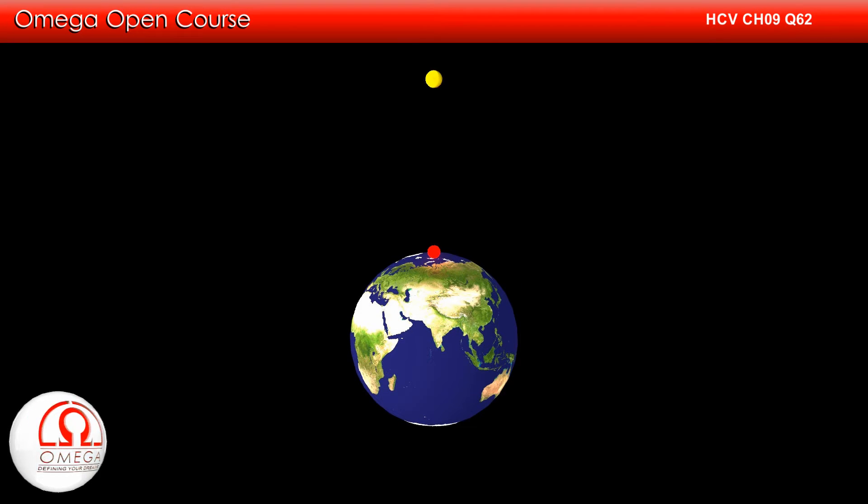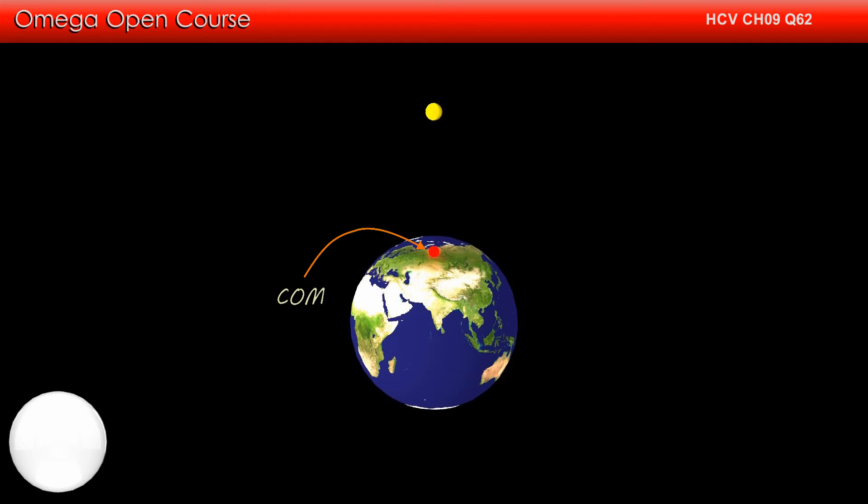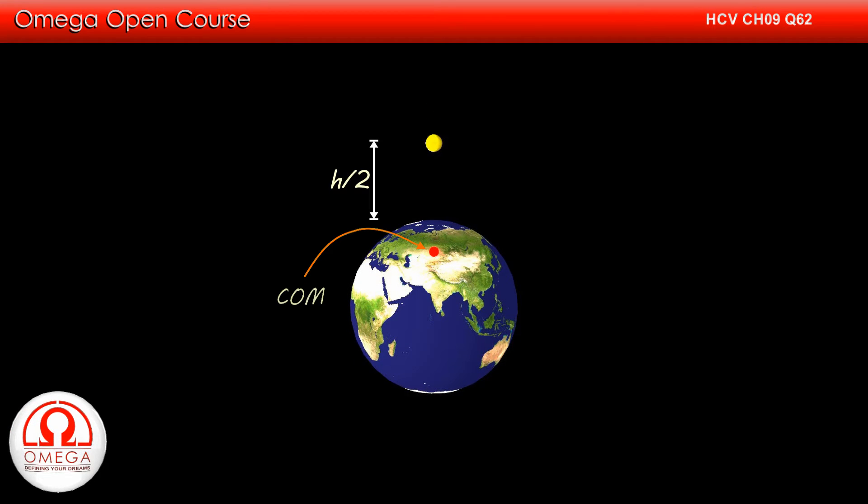If you look at the earth-block system, there is no external force acting on it. Therefore, its center of mass cannot move. Now, whenever the block will move, the earth will also move so as to keep the center of mass fixed at its position.